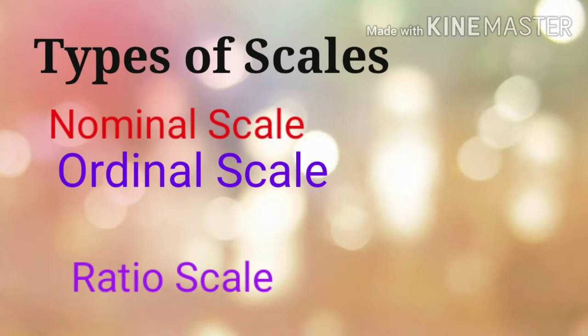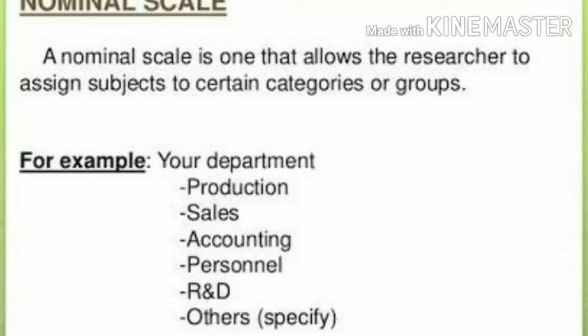First, let's look at nominal scale. Nominal scale is used for variables which can be categorized but cannot be ranked. For example, blood groups of the respondents can have the responses A, B, AB, or O. Here, the response can be categorized but it cannot be ranked.